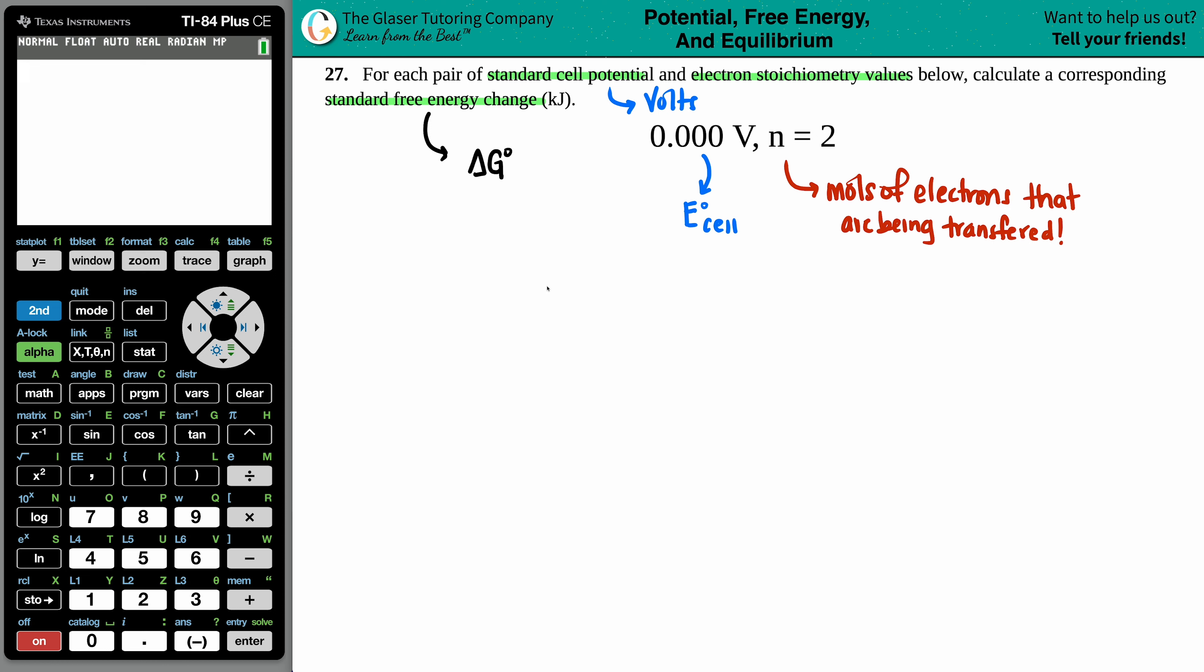Well, I got an E cell, a ΔG value. There's only one formula that goes with this. And that is this one, ΔG° equals negative nFE cell.